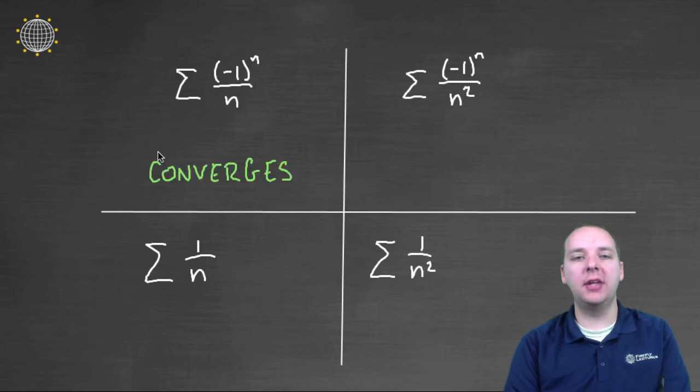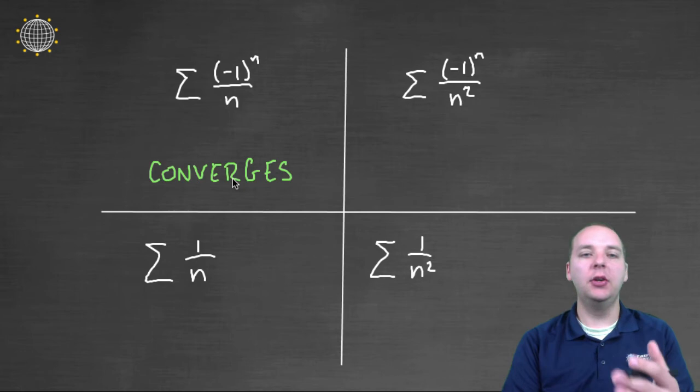First of all, I'll tell you that the first guy, he converges. Now I'm not going to go through a lot of the details of proving this. You can use the alternating series test or ratio test or whatever test you want to use. But I'll just tell you, this guy converges.